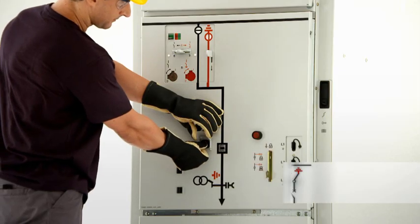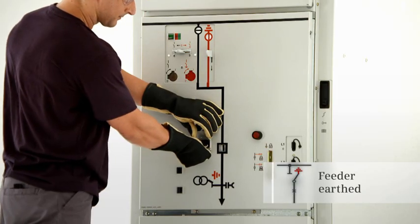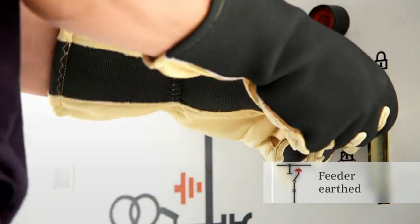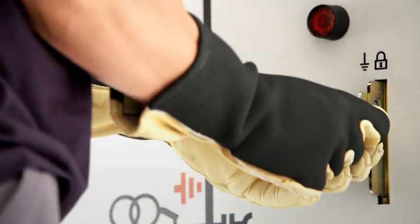The feeder is earthed by closing the circuit breaker. A locking device interlocks the switchgear in the current switch position.